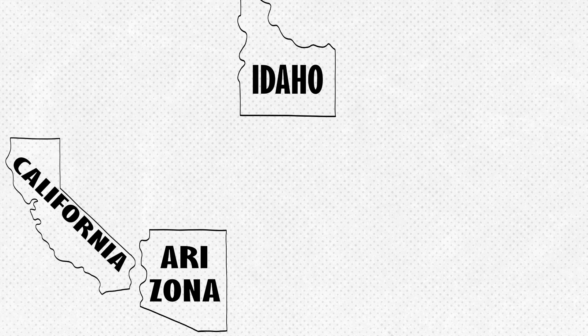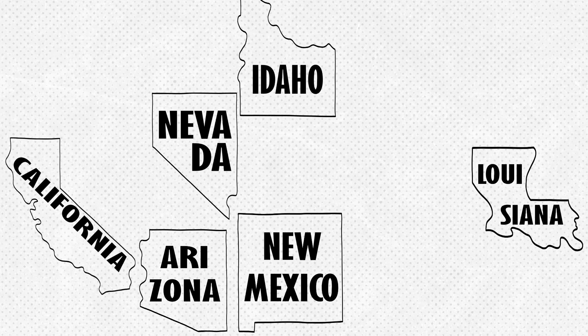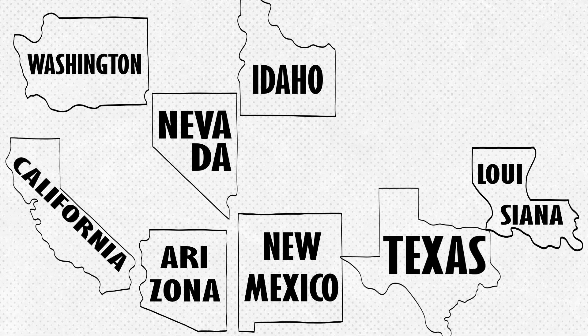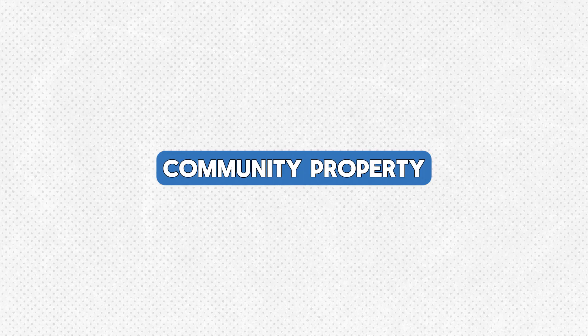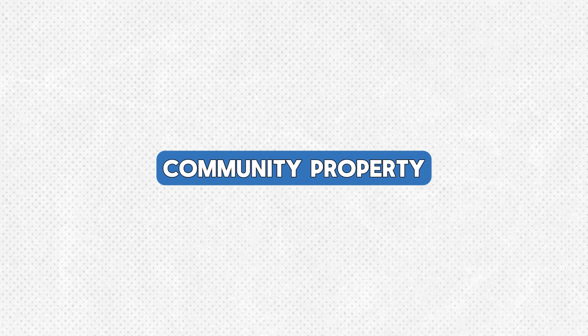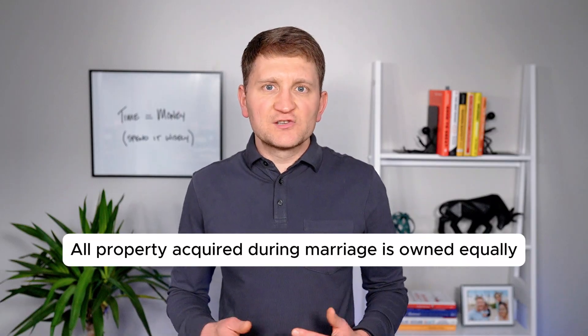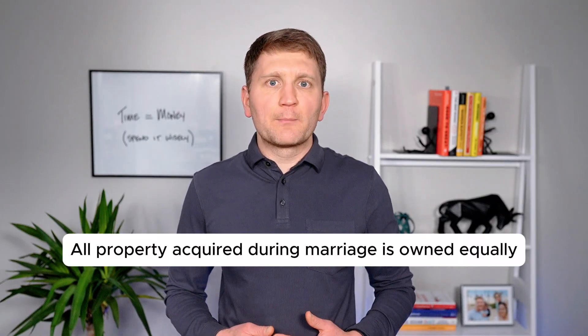In nine states — Arizona, California, Idaho, Louisiana, Nevada, New Mexico, Texas, Washington, and Wisconsin — community property is the default for married couples. Any property acquired during the marriage is equally owned by both spouses. Property acquired before marriage or received as a gift or inheritance during marriage remains separate. However, if separate property is mixed with community property, it's often treated as community property.